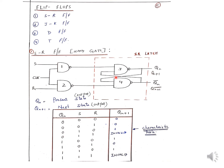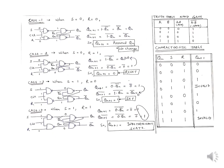For each flip-flop we will do the characteristic table and the truth table. This is the characteristic table of the SR flip-flop. I have taken three inputs: Qn, S, R, and Qn+1. Qn is the present or previous output, and Qn+1 is the next output. With three inputs, eight combinations are possible, so we have taken all eight combinations here.